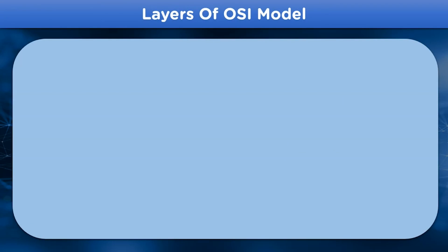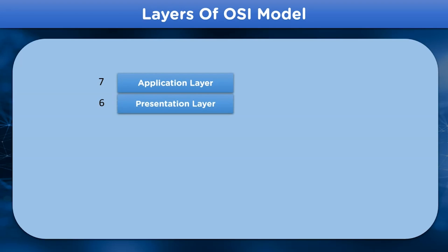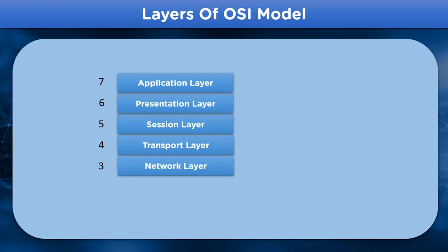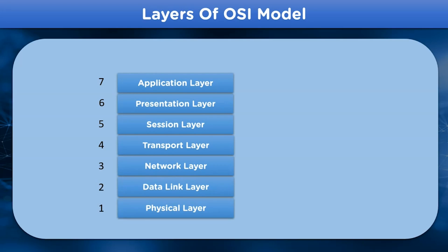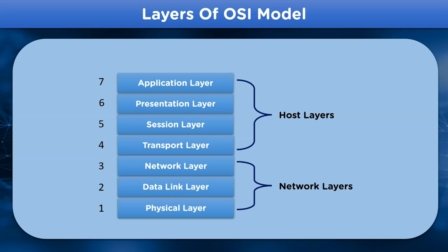The OSI model consists of seven different layers which perform specific functions and apply different protocols to maintain quality and prevent data from getting corrupted during transmission. The layers are: Application layer (topmost), Presentation layer, Session layer, Transport layer, Network layer, Data link layer, and Physical layer (the last layer). The upper four layers represent host layers interacting with application-related issues, whereas the lower layers are termed network layers dealing with transmission-related steps.